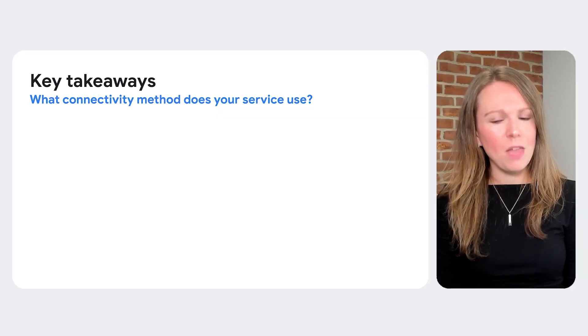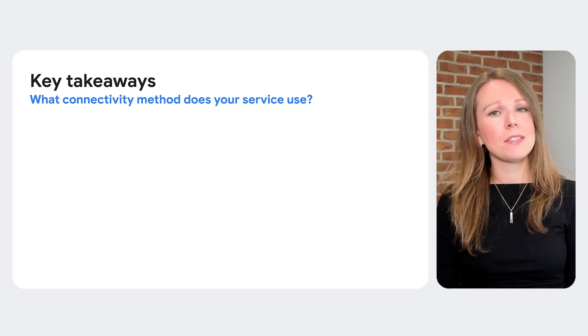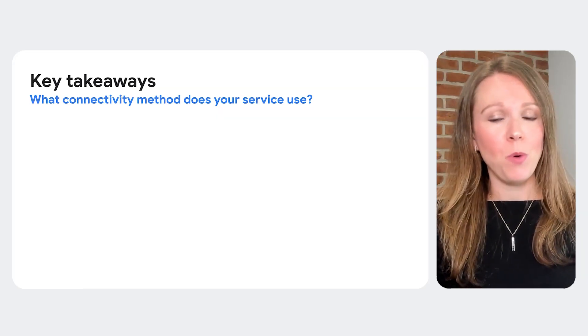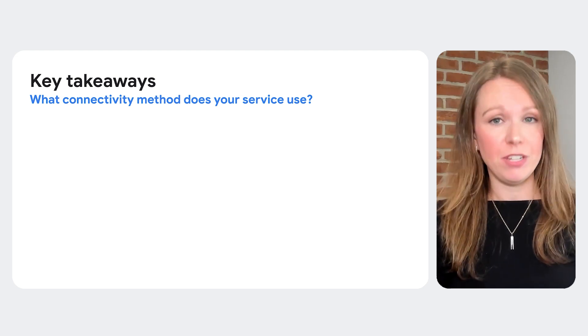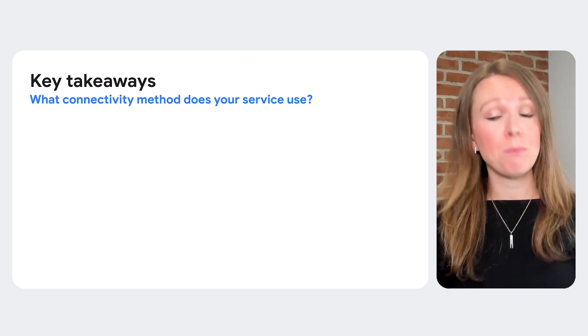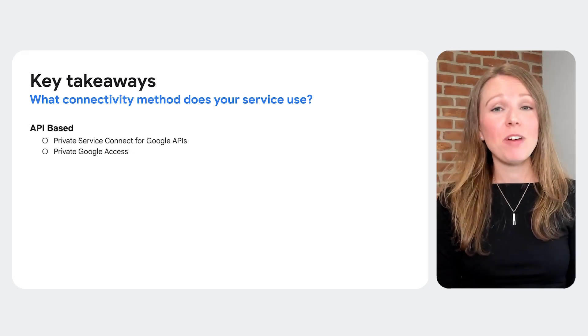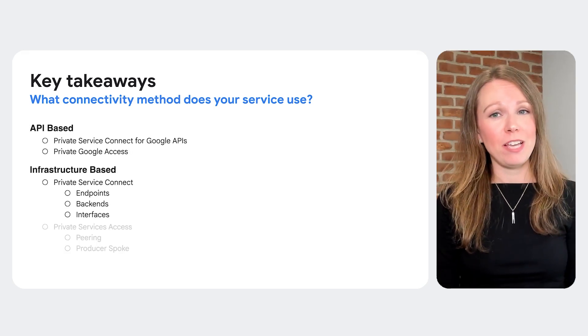Check the linked documentation below to understand which services support which types of Private Service Connect or Private Services Access. As for serverless products like Cloud Run, that will be covered in depth in another video. Key takeaways: always check which connectivity method your service requires — PSC for Google APIs and standard PSC behave differently, and using the wrong one can break access. Services are either API-based, infrastructure-based, or serverless, each with their specific connectivity methods.